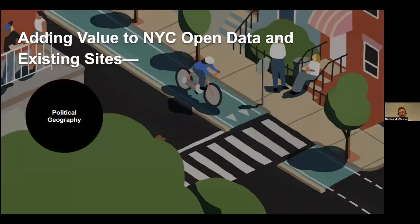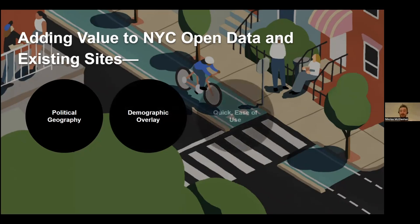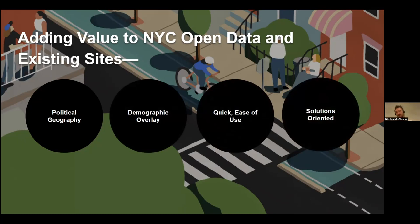Some of the things we were looking at: we wanted a scale of political accountability, which is probably some of the more interesting data analysis we had to do. We also wanted demographic overlay — not only over space, looking at who is affected by different impacts of public space quality, but also who specifically. It should be easy and quick to use, and also solutions-oriented: how can we act on this data and turn it into a meaningful solution?